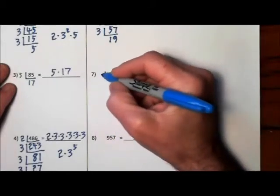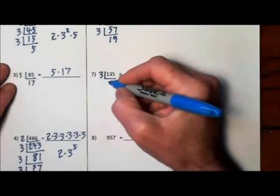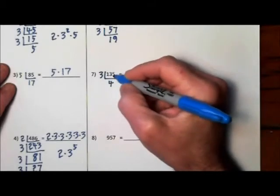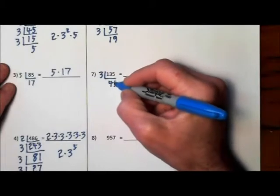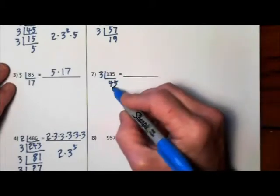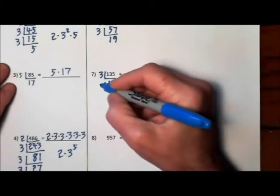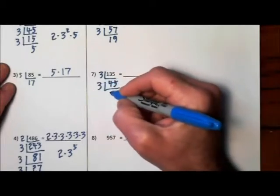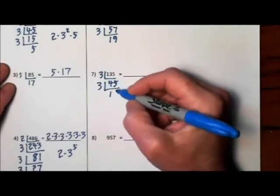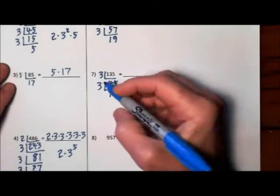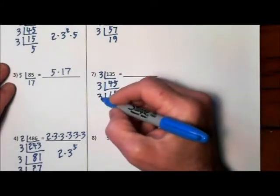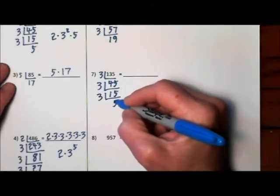3 goes into 13, 4 times with 1 left over, so that's 15. 3 goes into 15, 5 times. Will 3 go into 45? Yes. 3 goes into 4 once with 1 left over. 3 goes into 15, 5 times.